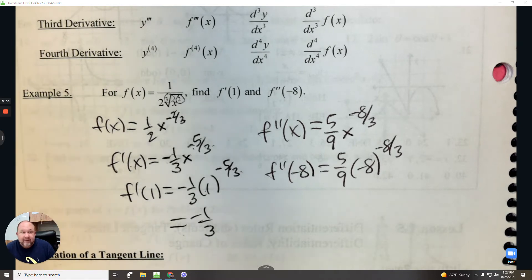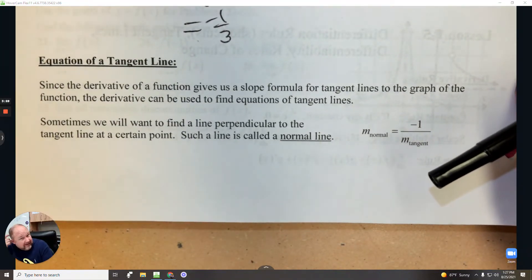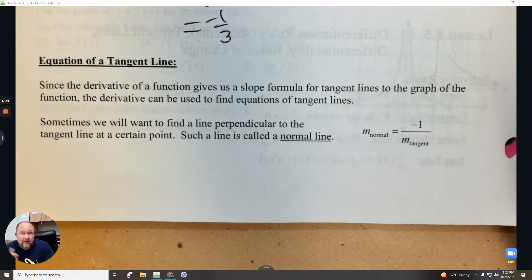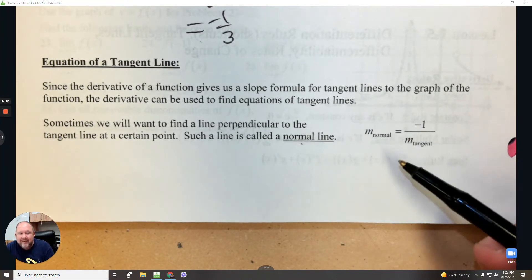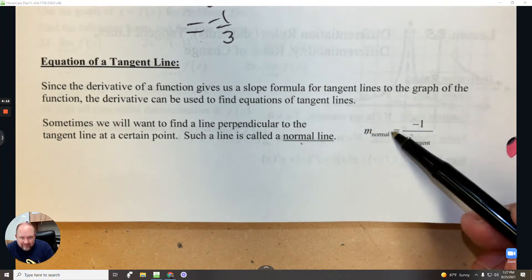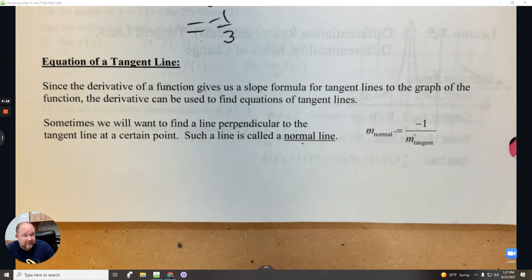Number 6. Alright, the next topic for the lesson. The equation of a tangent line, which is the derivative, right? The slope. Can you write the equation of a tangent line? Sometimes we want to find the line perpendicular to it. That's called the normal line. When slopes are perpendicular, that's the opposite and the reciprocal. So we're going to practice that right now.